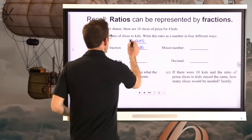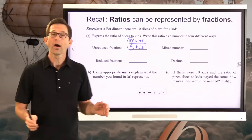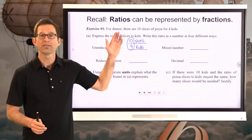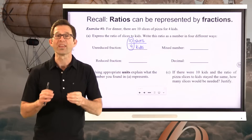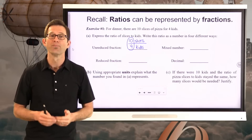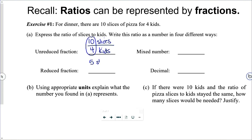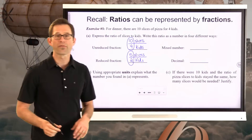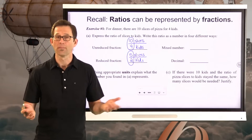As a reduced fraction, we can take ten-fourths and divide both the ten and the four by two — in effect really scaling this ratio down to its simplest form — and that would then be five slices per two kids. At the end of the day we're just talking about the fraction five-halves, and five-halves and ten-fourths are the same number.